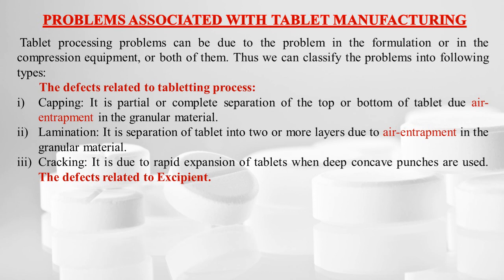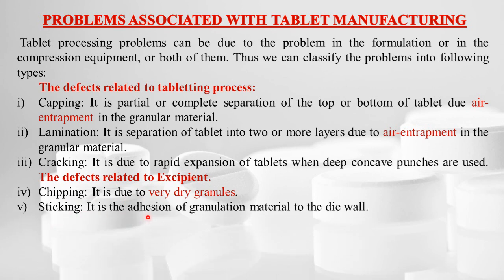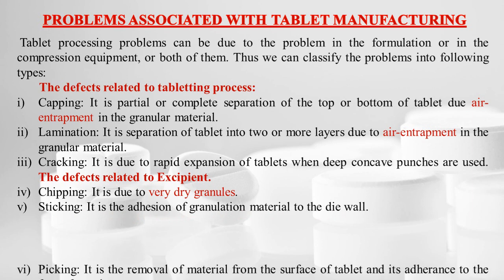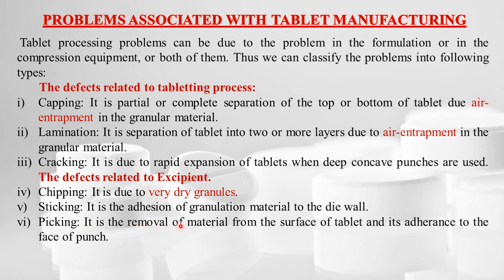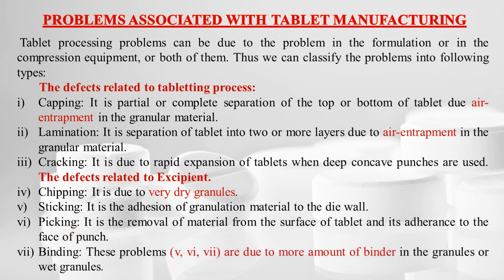Defects related to excipients or granulation: chipping — due to very dry granules; sticking — adhesion of granulation material to the die wall; picking — removal of material from the tablet surface and its adherence to the punches (P for picking, P for punches); and binding. Sticking, picking, and binding are due to excess binder or excessively wet granules.